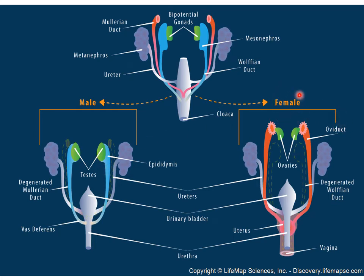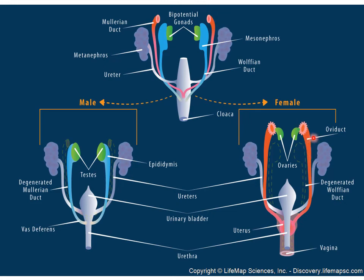In the female, the opposite occurs: the Wolffian mesonephric duct degenerates, while the Müllerian paramesonephric duct is stimulated and develops. In the male, the Wolffian duct develops and the Müllerian duct degenerates.